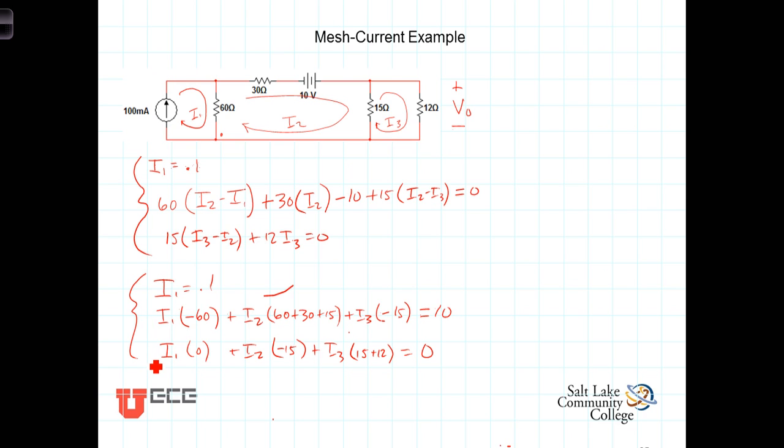Now let's just go ahead and calculate these. Let's see, this is going to be 60 plus 30 is 90, plus 15 is 105. And then this here is 15 plus 12 is 27. We can go ahead and plug that into our calculator, either using the solve facility or matrix algebra.